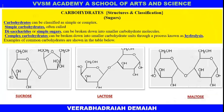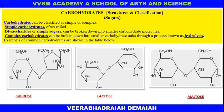Coming to the carbohydrate structures and classification of disaccharides: sucrose on further acid hydrolysis gives glucose and fructose. Lactose gives simple sugars — glucose and galactose. Maltose is made up of two glucose molecules.